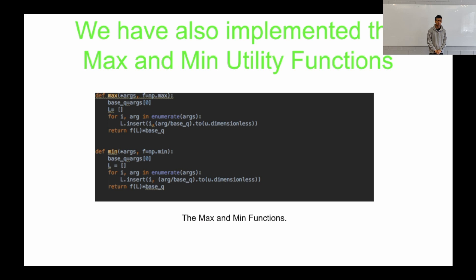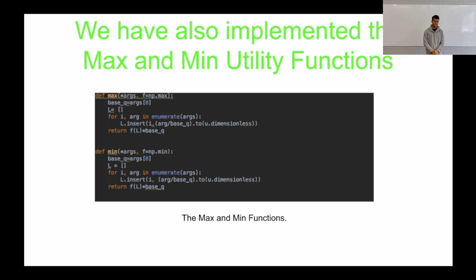We've also implemented max and min utility functions. The max function returns the maximum value of a data set, and the min function returns the minimum value. This is helpful as a general utility function if a user ever needs to find the maximum or minimum of a data set.